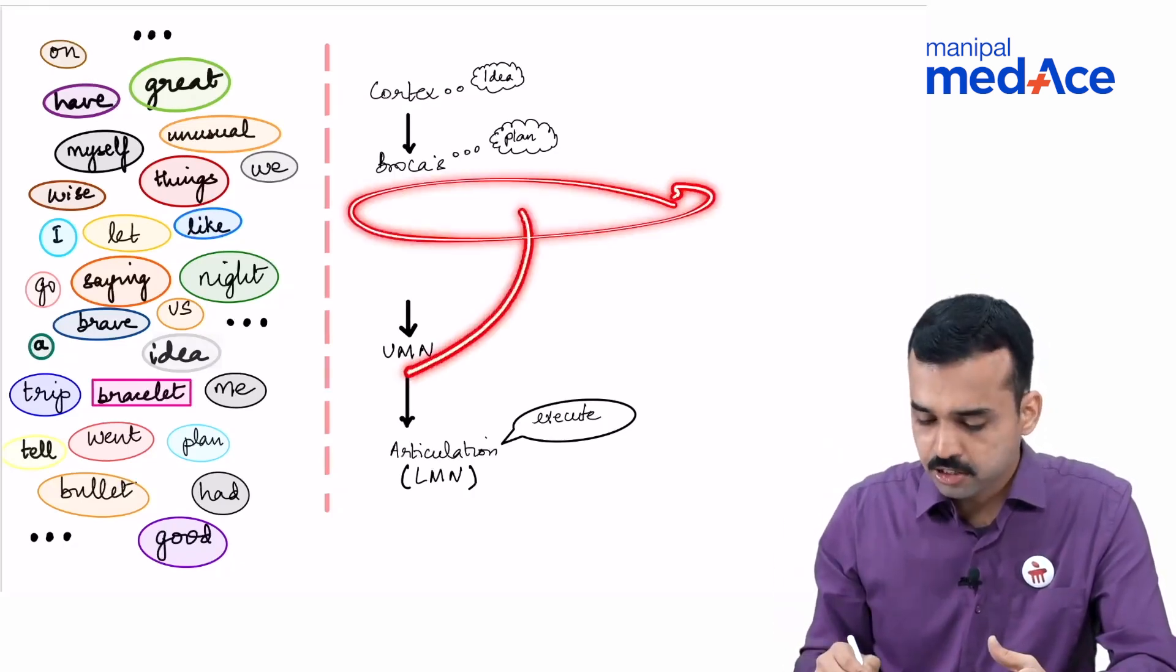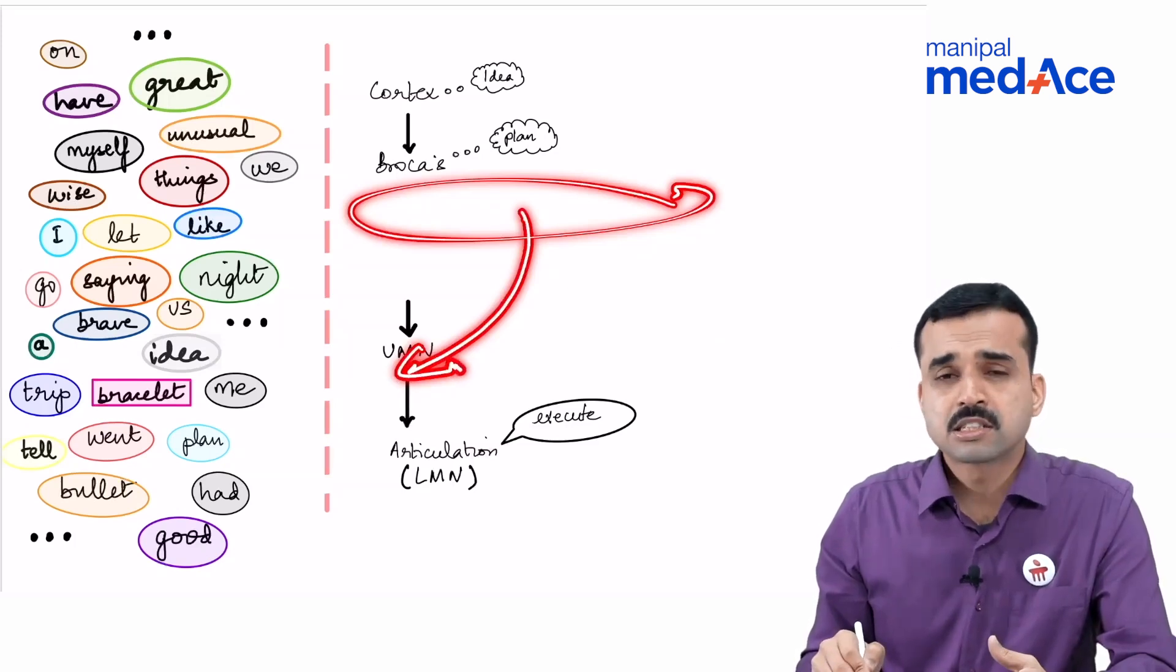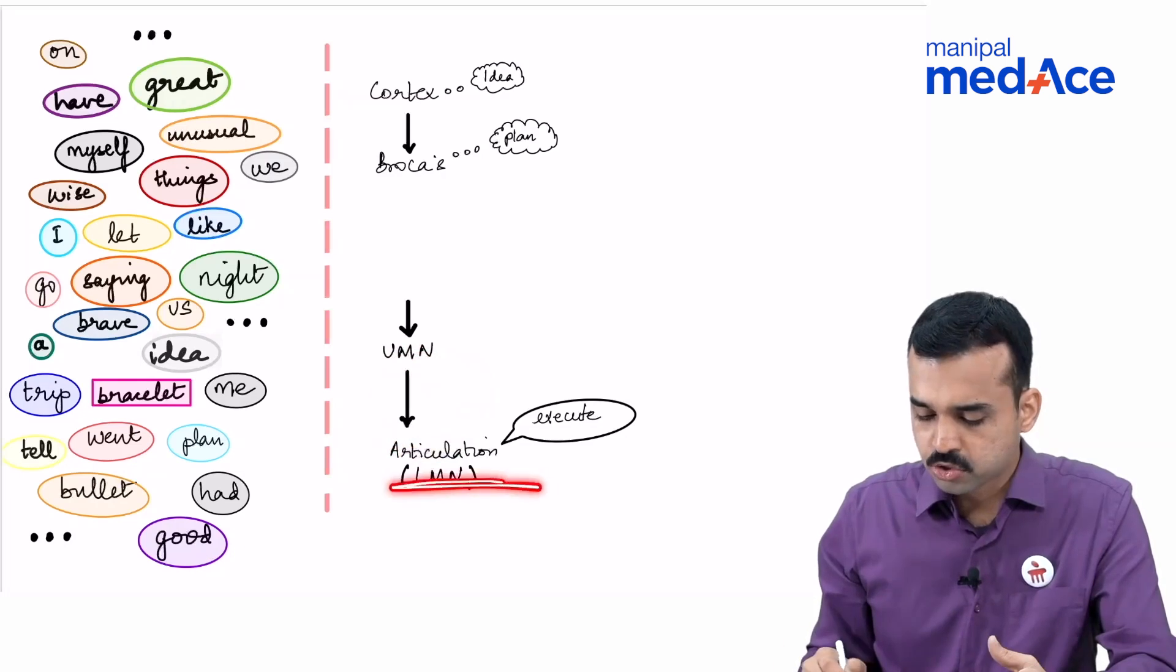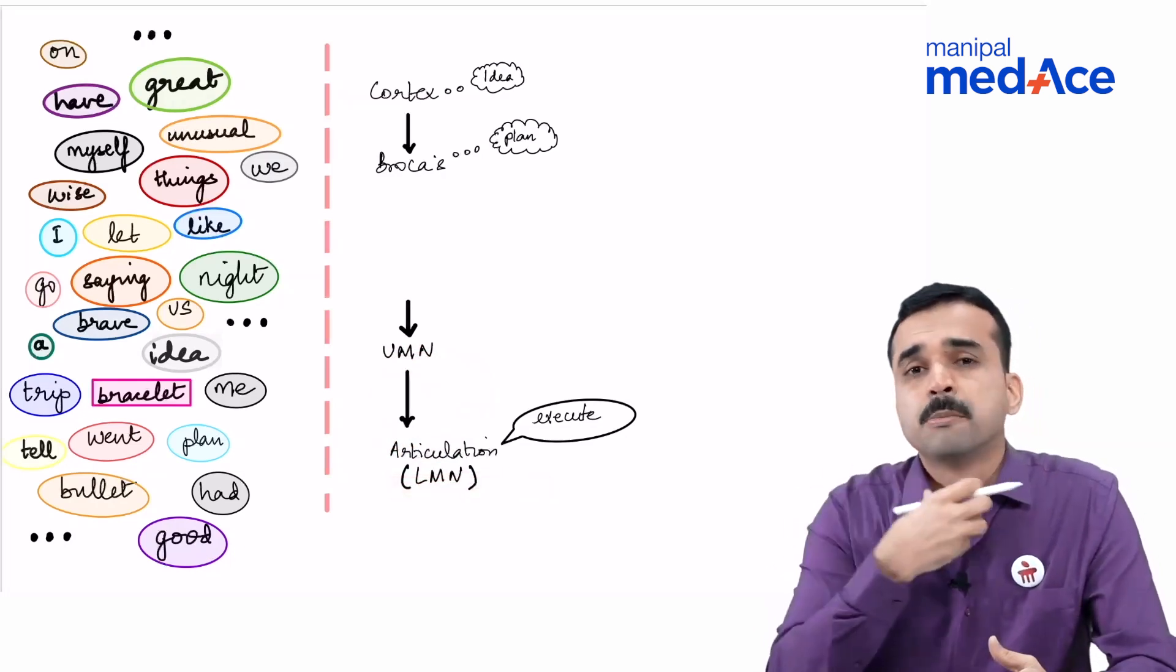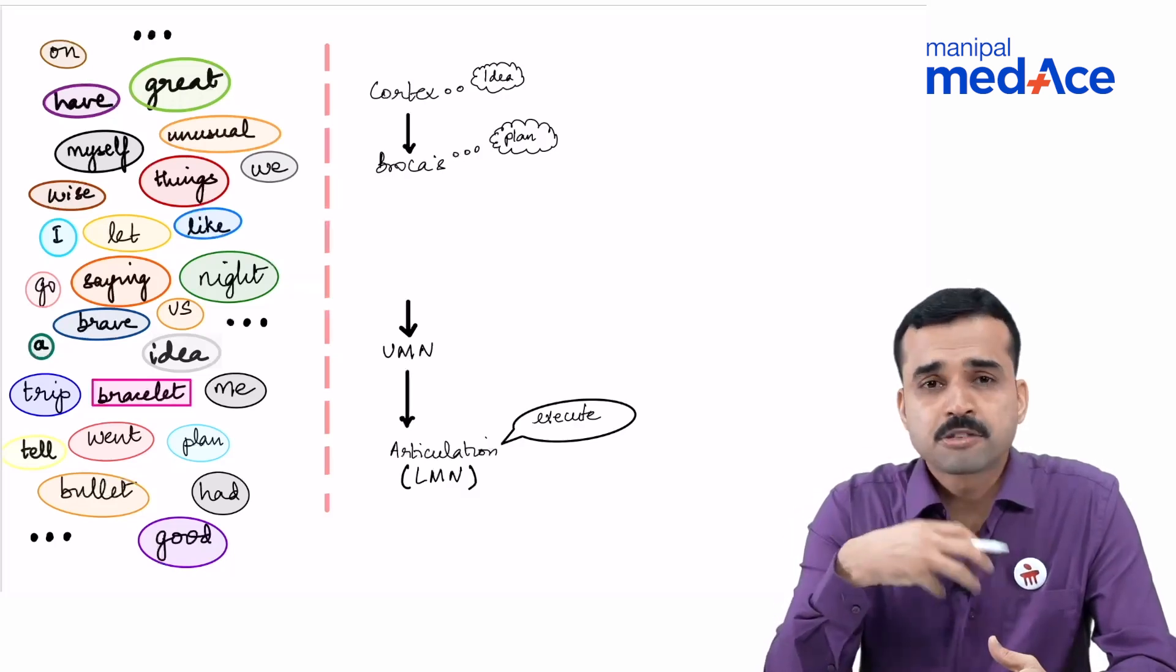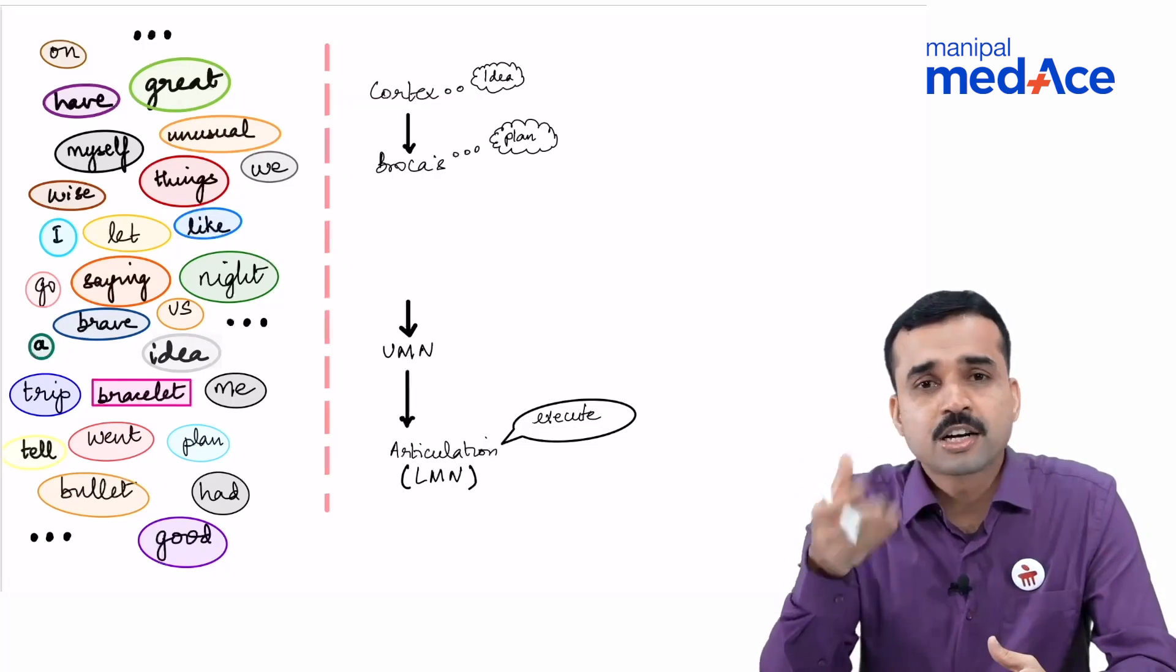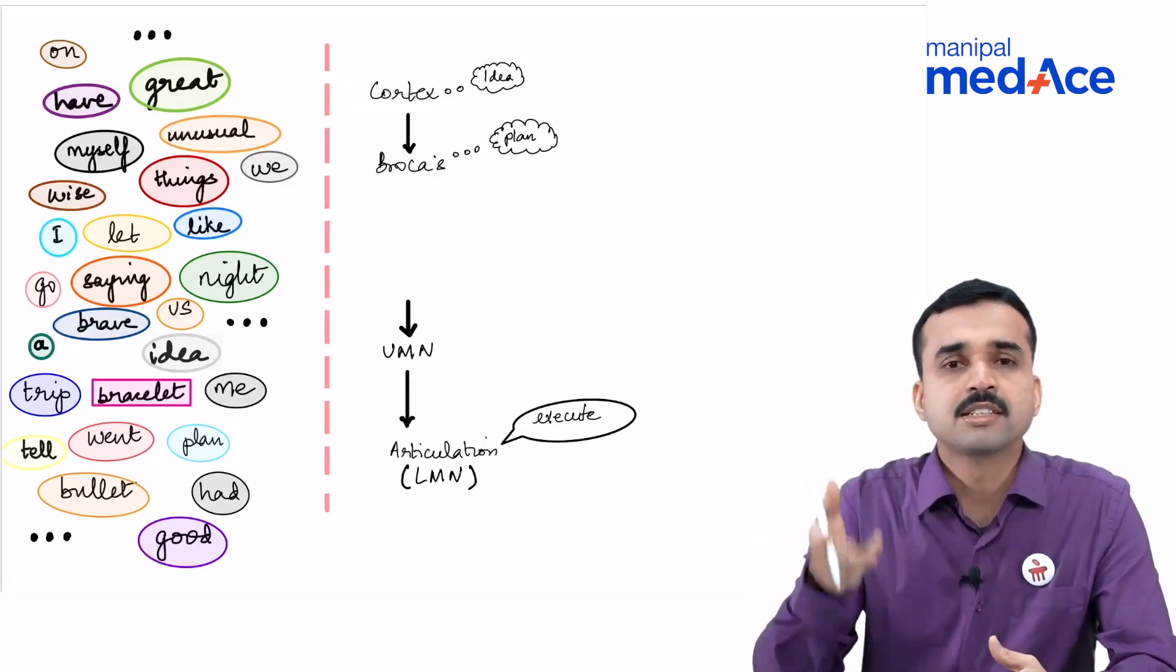Once it has formed that sentence, it will convey it to the upper motor neurons which innervate the muscles of articulation followed by the transmission of impulses to the lower motor neurons. The muscles of articulation will then speak out. My larynx will produce the voice with the help of the diaphragm contraction. The air which is being expired will be modulated and muscles of articulation will help me to speak the way I am. This is what is happening.